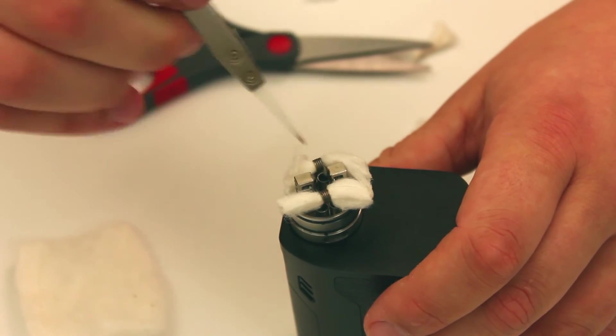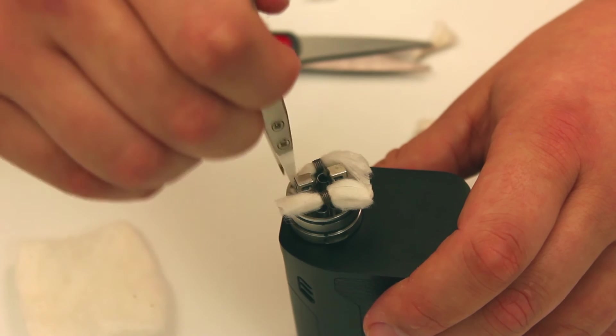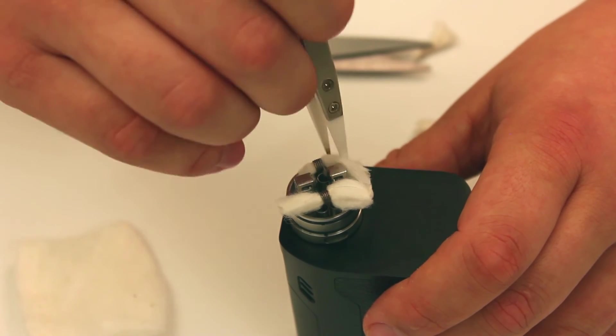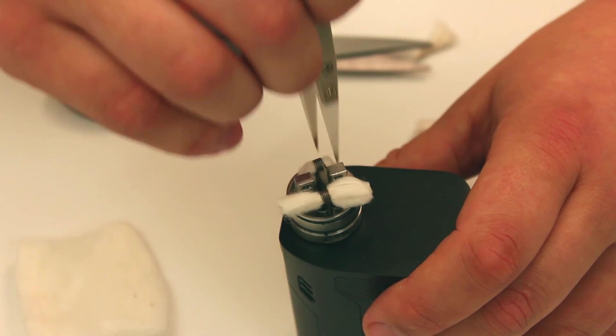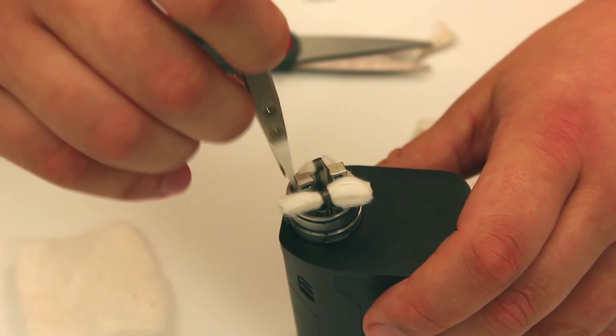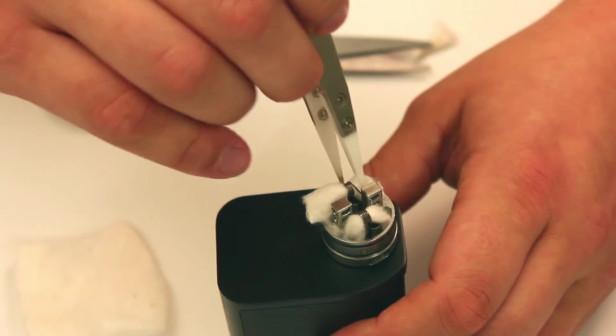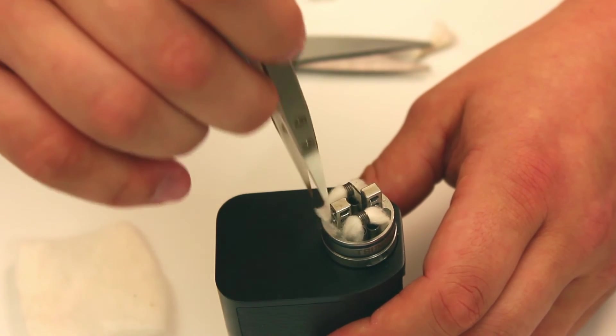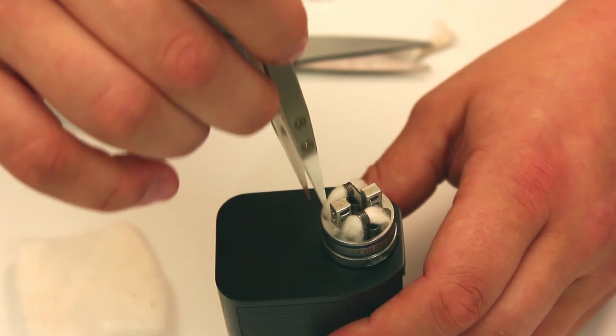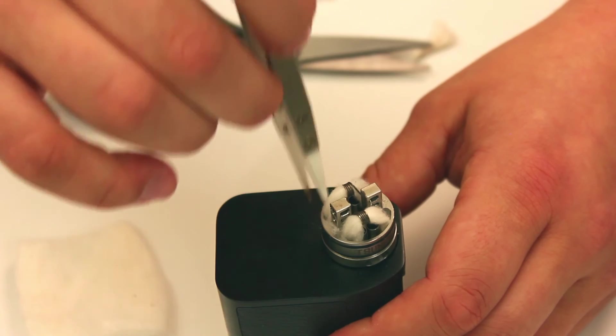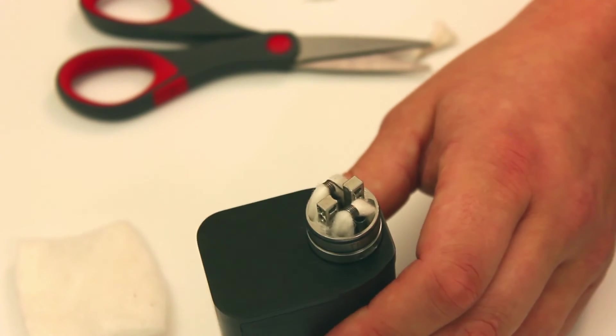So that's why you were saying earlier, you know, make sure everything's centered and the same height and all that other good stuff. You want everything centered and everything just right so you can tuck that cotton in so it makes it nice and even. Looks just like that.